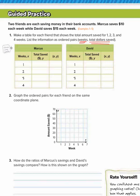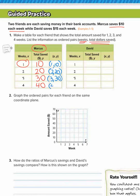So for Marcus, he saves $10 each week. So for Marcus, in week 1, he saves $10. So that means in week 2, it's $20. Week 3, it's $30. And week 4, it's $40. So as ordered pairs, that would be (1, 10). We always put parentheses around ordered pairs. (2, 20), (3, 30), (4, 40).